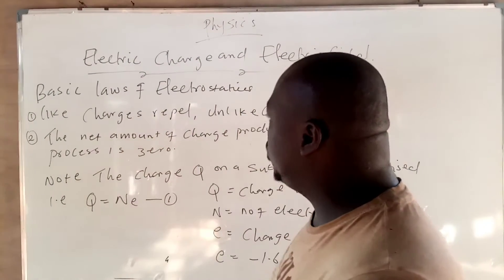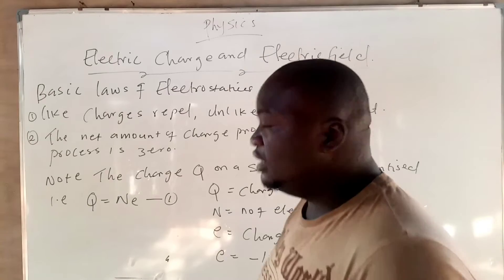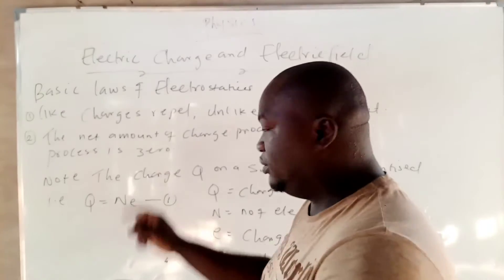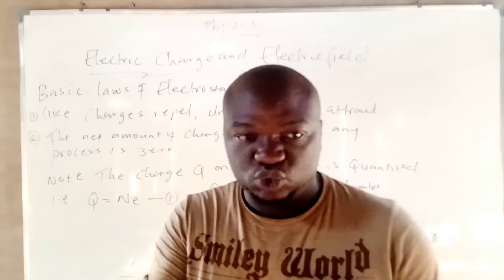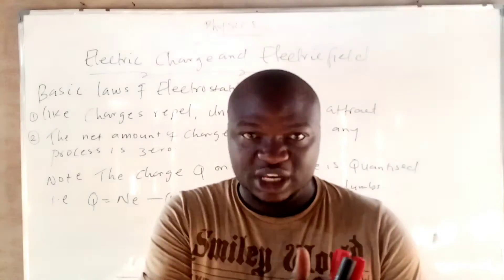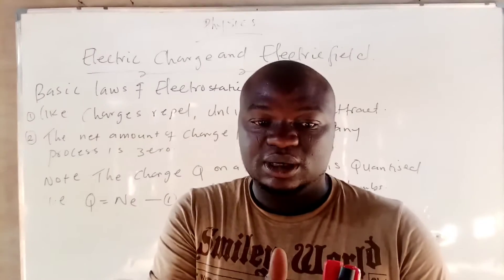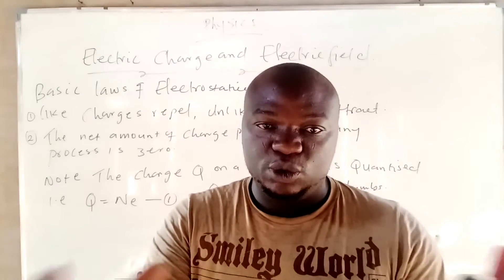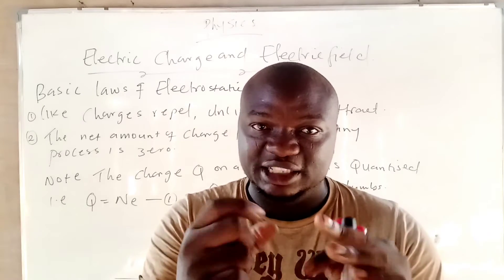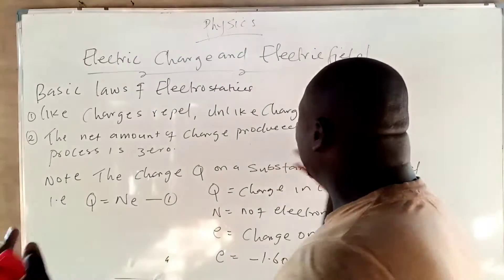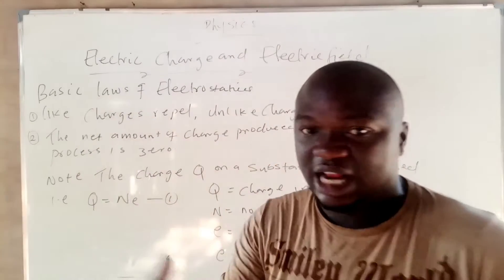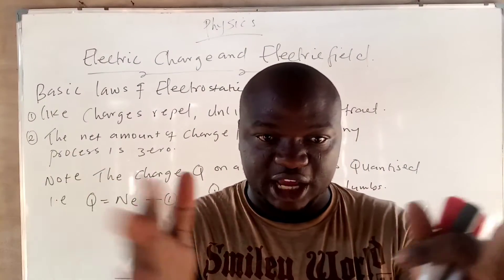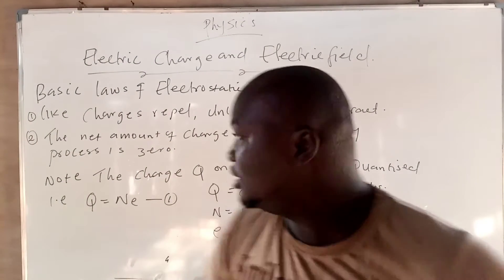The basic law of electrostatics: we know that like charges repel. Plus and plus, when you bring them together, they repel. When you bring a negative charge and a negative charge together, it repels. But unlike charges attract — when you bring a positive and a negative charge together, they attract.